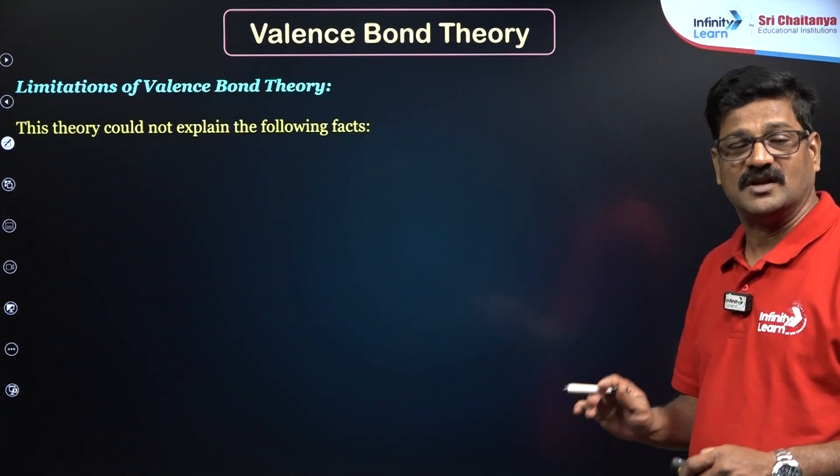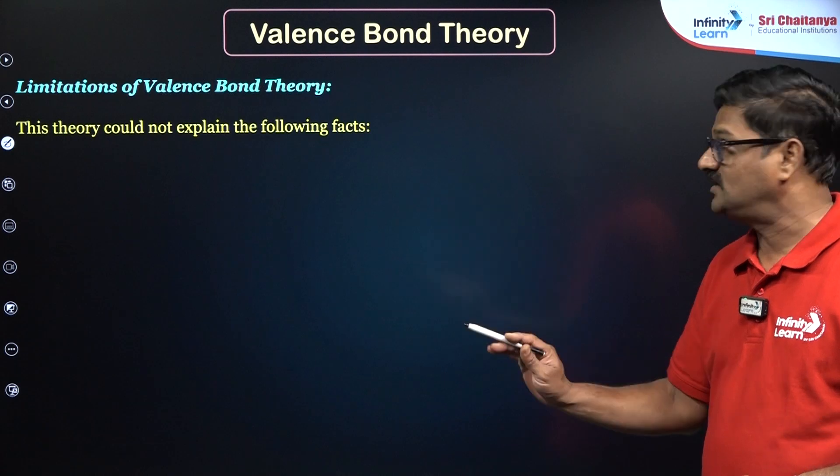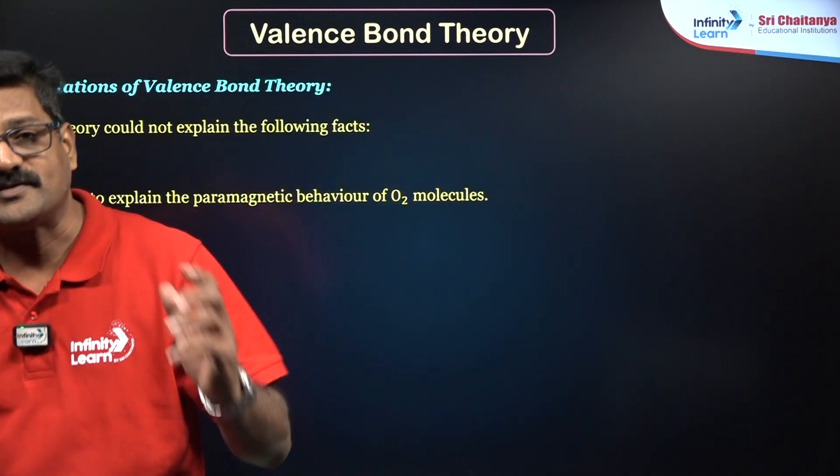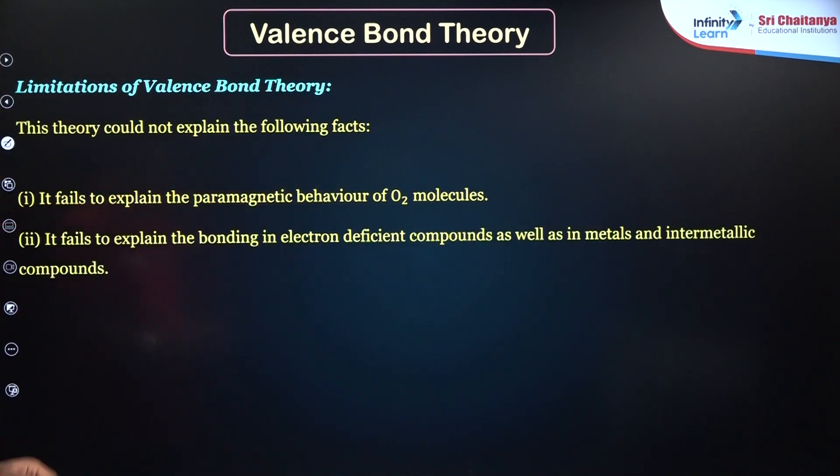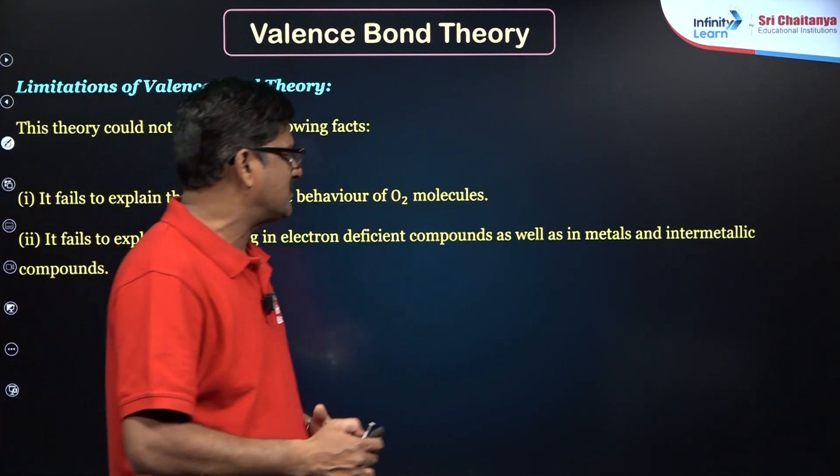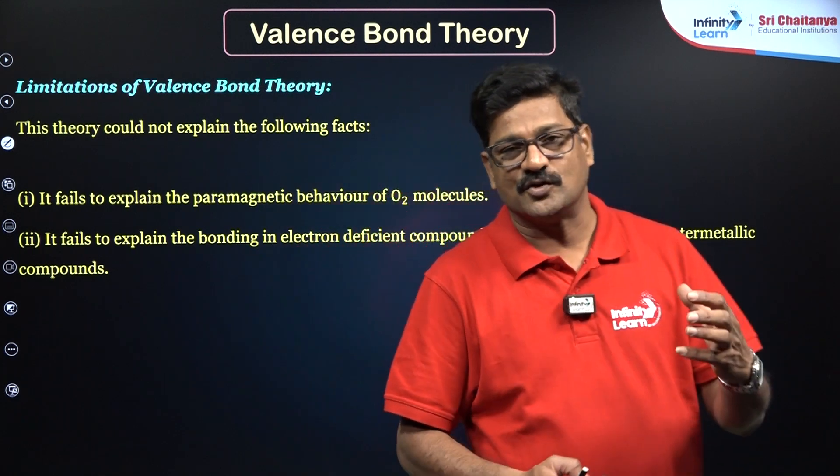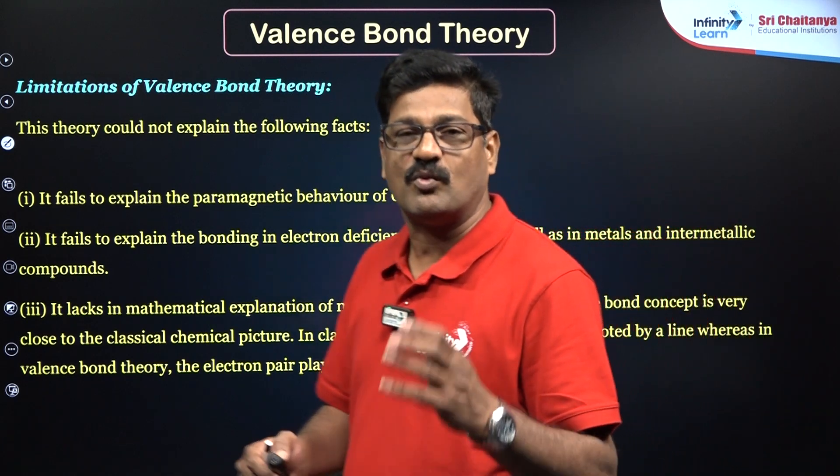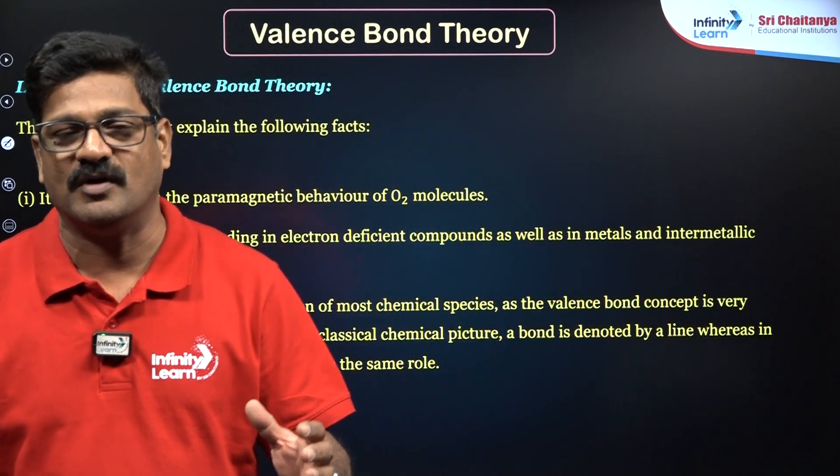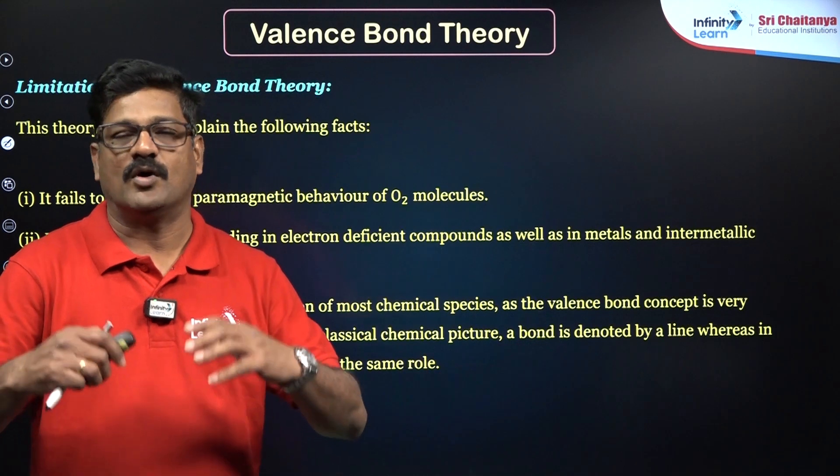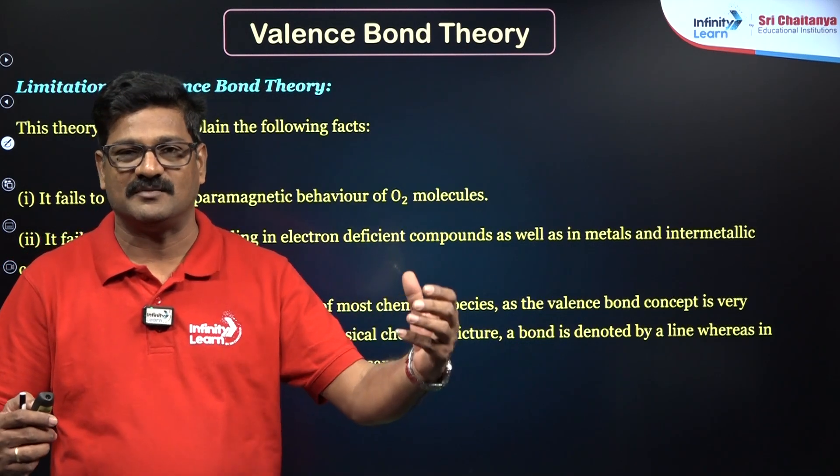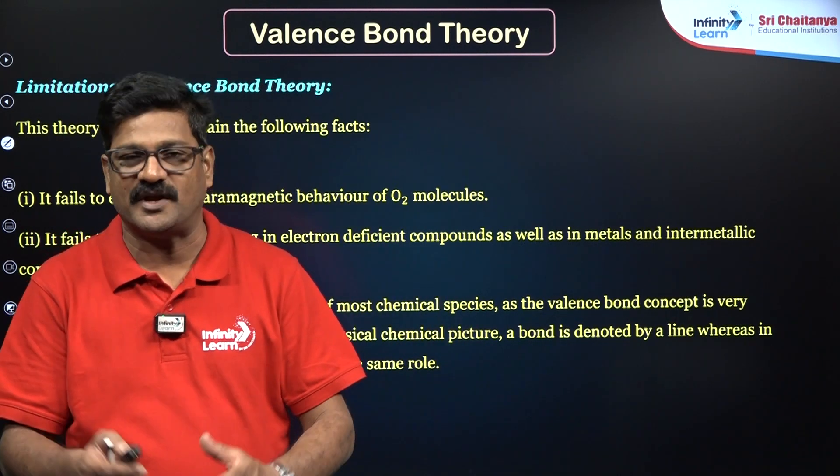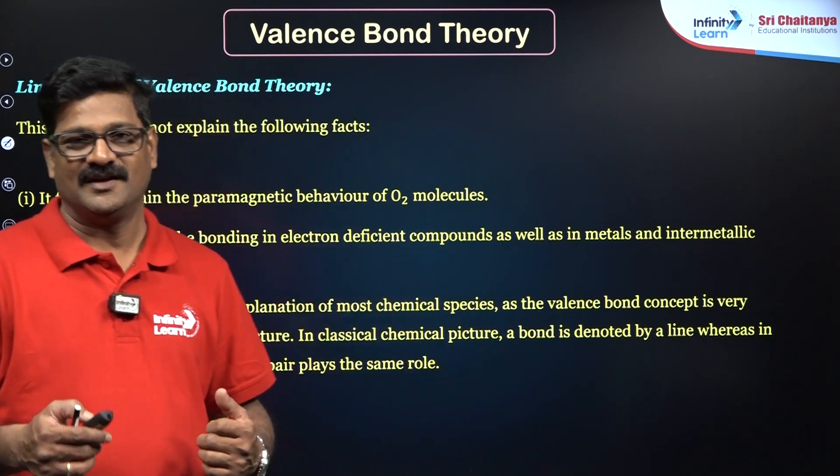And let us talk about the limitations of this valence bond theory. In this limitation of valence bond theory, you can say it fails to explain how oxygen is paramagnetic. And also it fails to explain electron-deficient compounds and also metallic bonds. And also it lacks mathematical explanation, quantitative explanation about the valence bond theory and the covalent bond formation. During that time quantum mechanics was also developing, and this theory cannot explain the quantum mechanical model of an atom.